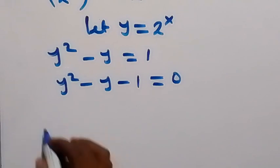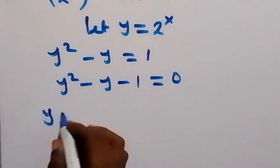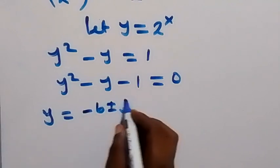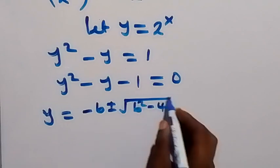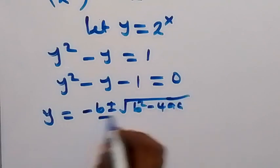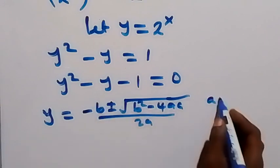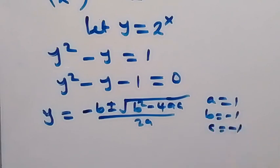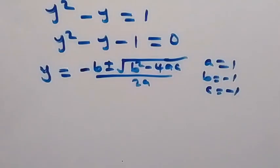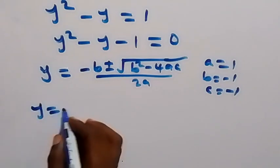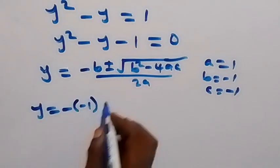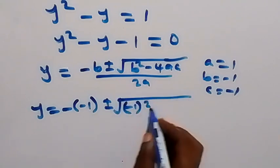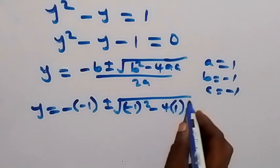We can solve this using the quadratic formula. We have y equals to minus b plus or minus square root of b squared minus 4ac, over 2a. Here our a is 1, b is minus 1, and c is minus 1 as well. Then we apply that, and this will be y equals to minus of minus 1, plus or minus square root of minus 1 squared minus 4 times a times c.